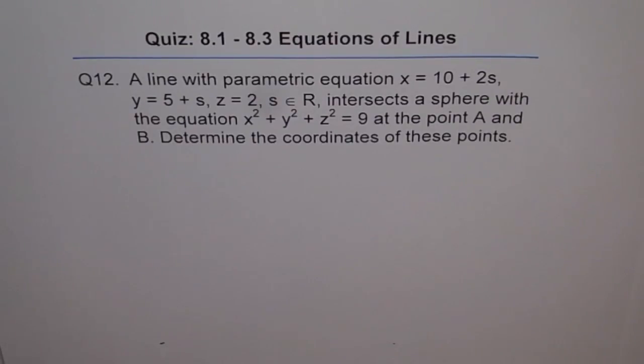Question 12. A line with parametric equation x equals 10 plus 2s, y equals 5 plus s, z equals 2, where s belongs to real numbers, intersects the sphere with the equation x square plus y square plus z square equals 9 at the point A and B. Determine the coordinates of these points.